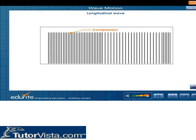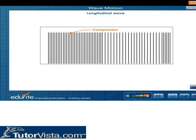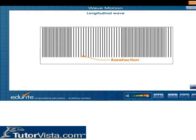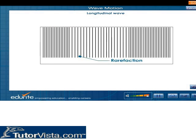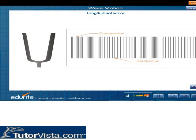The regions where the molecules come closer are called compressions. The regions where the molecules move apart are called rarefactions. That is, longitudinal waves propagate in the form of compressions and rarefactions.